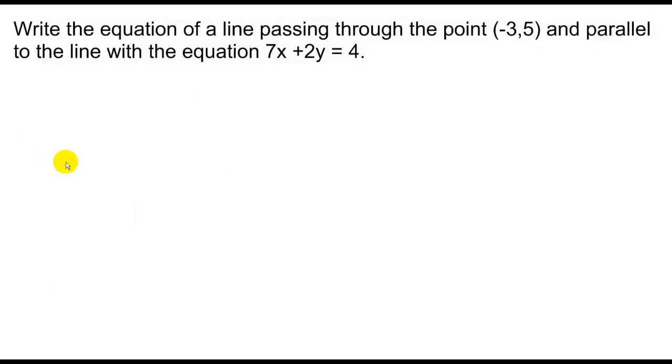Moving to the next example we want to write the equation of a line passing through a specific point and parallel to a line with the following equation. When we talk about parallel lines we know from algebra 1 they have the same slope.